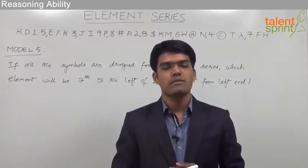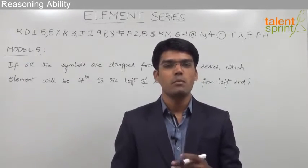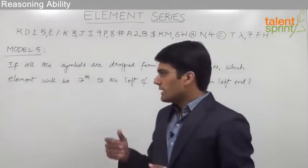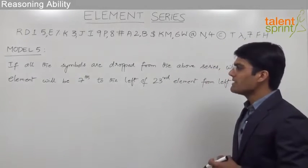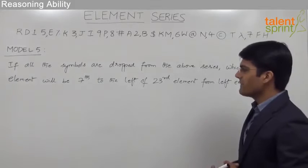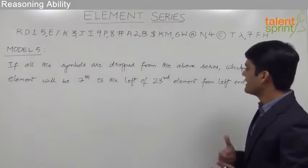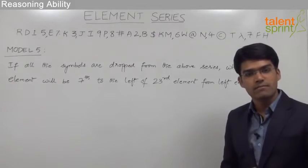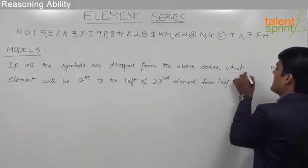Let us now discuss the fifth model from element series, which is in line with model 4. The question here is: if all the symbols are dropped from the above series, which element will be 7th to the left of 23rd element from the left end? If we observe the second part of the question, which element will be 7th to the left of 23rd element from the left end, this is as it is.